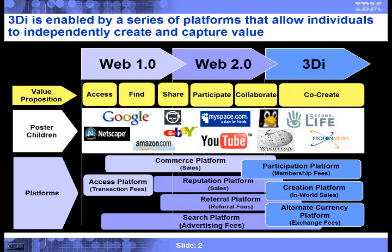That commerce platform remains through today. In Web 2.0, platforms are starting to change in nature. First, there are reputation platforms — a high Amazon or eBay rating can command a higher price. Similarly, a well-known blogger can monetize their reputation. Referral platforms take that further: a blogger can tie into Google AdSense or eBay products and earn referral fees by passing people through their cyberspace. And then there's the search platform — Google's contextually relevant advertising based on search inquiry, which most people understand well.